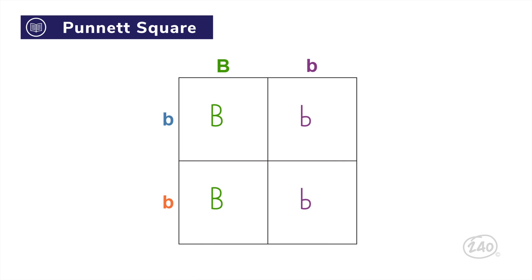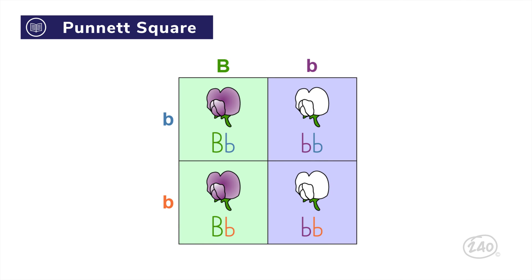Fill in the Punnett square by carrying the top parent's genes into each box directly below it. Then carry the genes from the parent on the left into each box on the right. Finally, analyze the genotypes and phenotypes of your results. Because there are four boxes, each box represents a 25% chance of getting an offspring with that genotype.